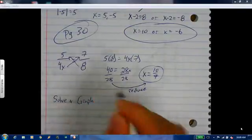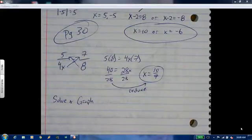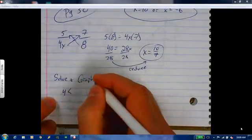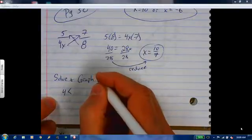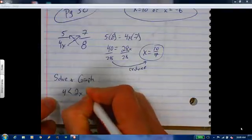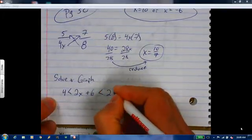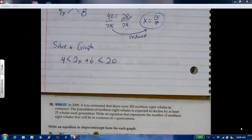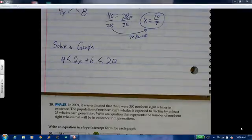A couple of you asked this already on chapter one. Solve and graph a compound inequality. It'll be like this. Compound inequalities are when you have two or more inequalities joined together. So four is less than 2x plus six, which is less than 20.